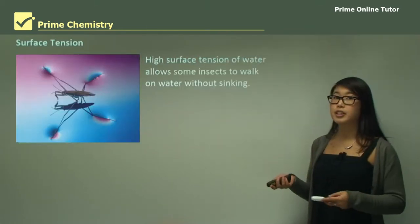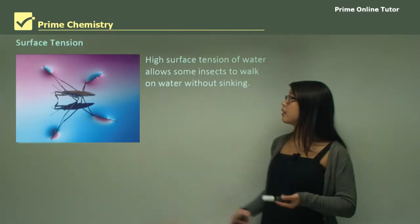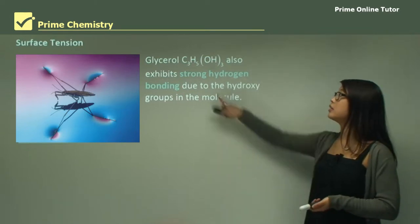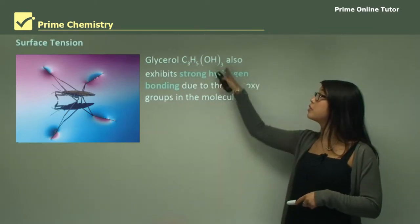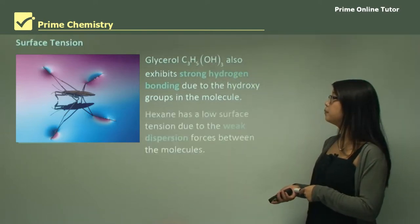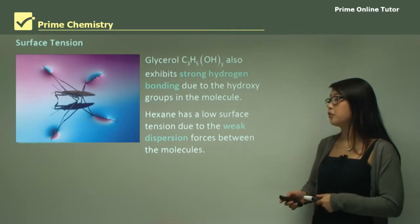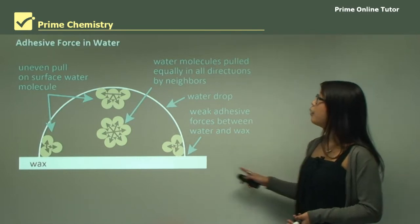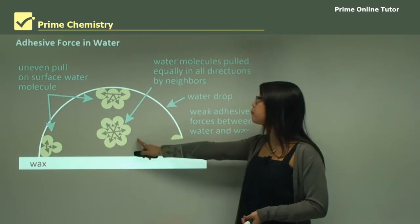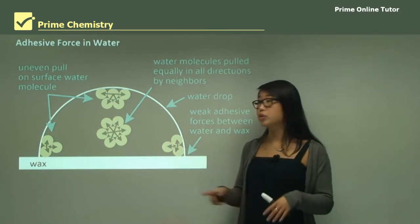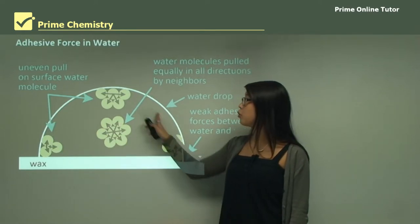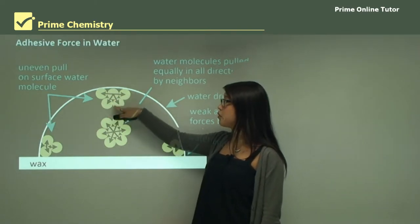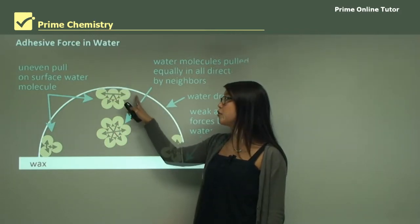High surface tension allows insects to walk on water without sinking, and is due to strong hydrogen bonding between water molecules. Glycerol also has strong hydrogen bonding because of its OH groups. Hexane has a low surface tension due to weak dispersion forces between its non-polar molecules. In summary, water molecules in the middle of a droplet experience attractive forces in all directions equally, but water molecules at the surface only experience attractive forces pulling inward, which is why water forms a sphere shape.